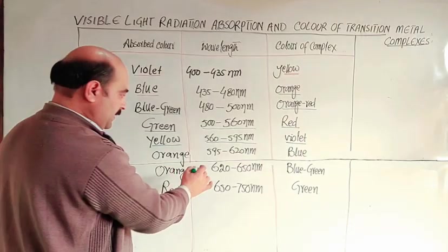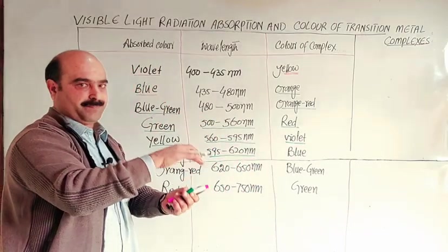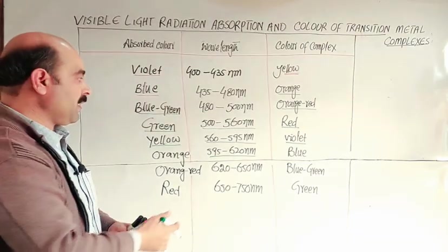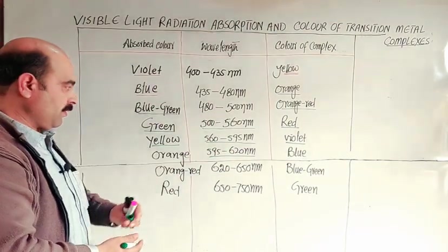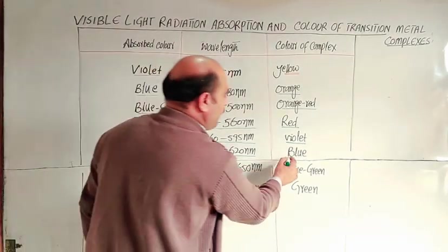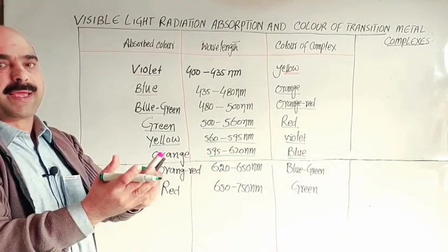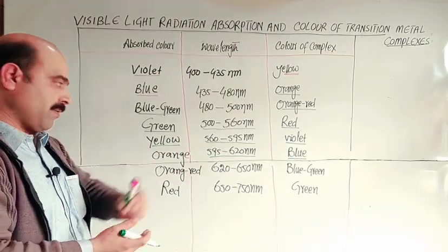A coordination complex, when visible light or white light falls on it, absorbs the orange wavelength radiation. Orange is absorbed, so the complementary color appears as blue. The remaining six colors are emitted, giving one color appearing as blue.